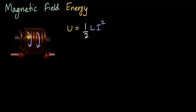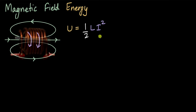Since there is current flowing in the inductor through the coils, it will produce a magnetic field. So the energy in an inductor is actually stored in the magnetic field within the coil — just as the energy of a capacitor is stored in the electric field between the plates.